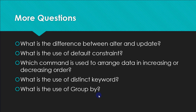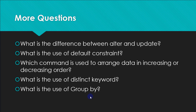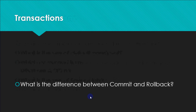GROUP BY is used to group rows which have a similar value for a column. For example, students from Delhi grouped together, students from Mumbai grouped together. We group when we have to perform aggregate functions like MAX, MIN, SUM, COUNT. A related question: WHERE vs HAVING. WHERE is used with normal commands to check a condition for every row being processed, whereas HAVING is used only with GROUP BY to check conditions on a group.